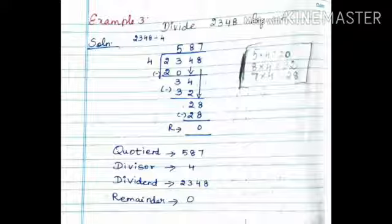Next subtract. 23 minus 20 is 3. Subtract 3 minus 3 is 0. Next place, 4 down. Next one, 8. 4 times 8 are 32. Next subtract. 34 minus 32 is 2. Subtract 2. Next place 8 down.